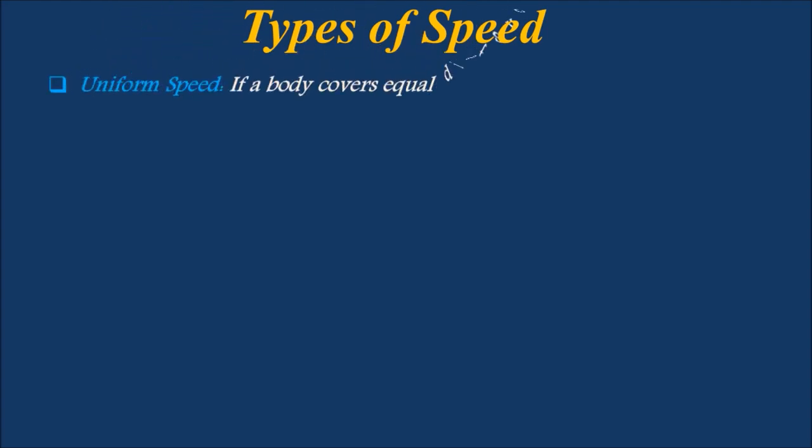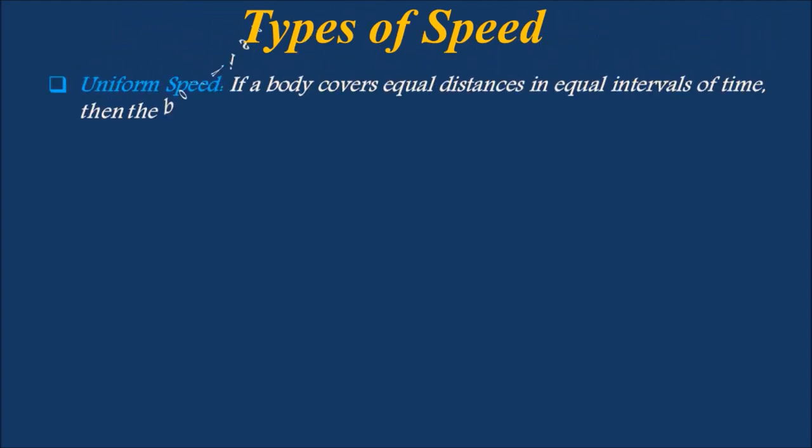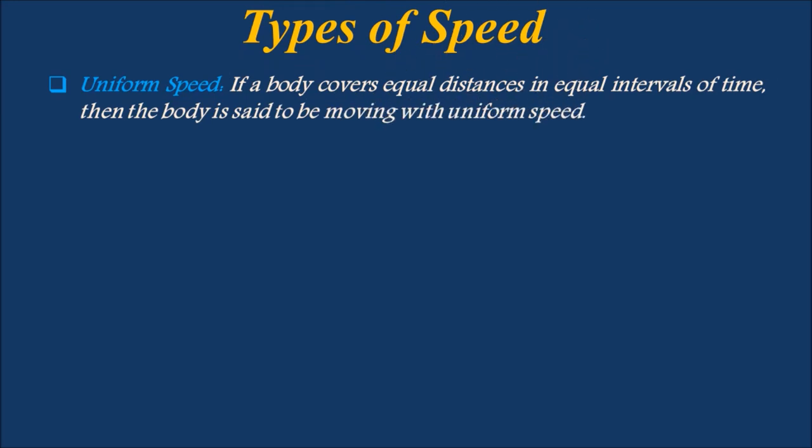The various types of speed are: uniform speed, variable speed, average speed, and instantaneous speed. If a body covers equal distances in equal intervals of time, then the body is said to be moving with uniform speed.